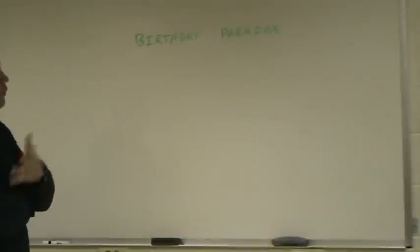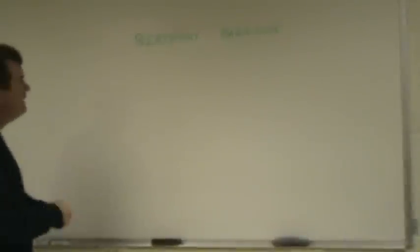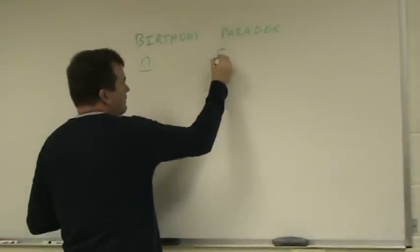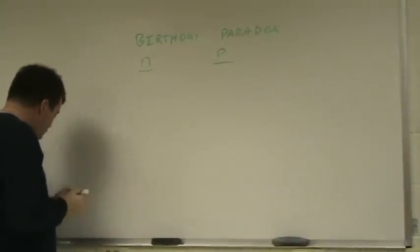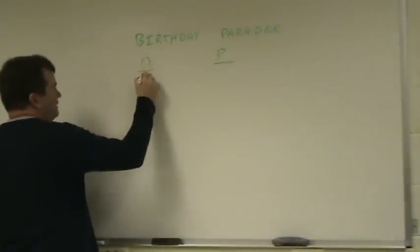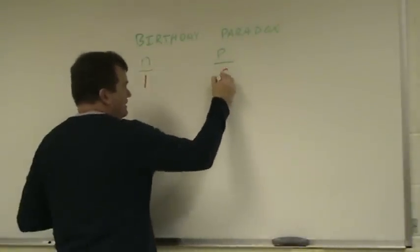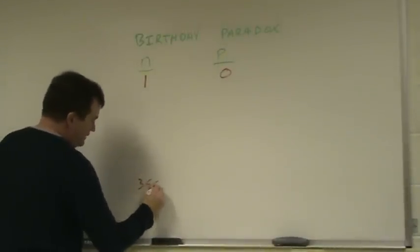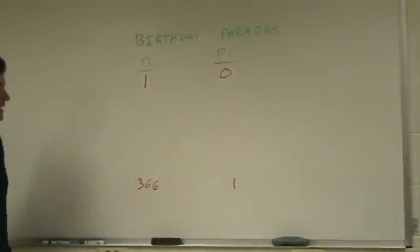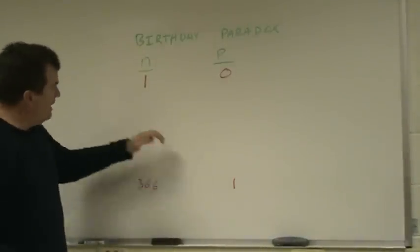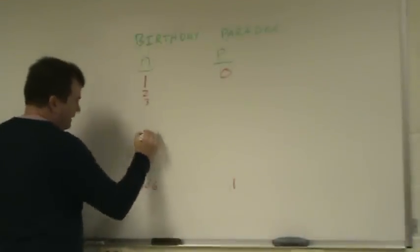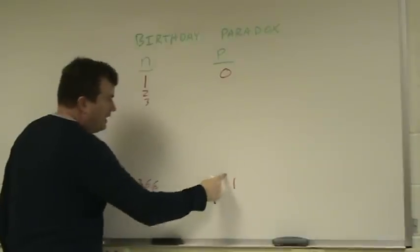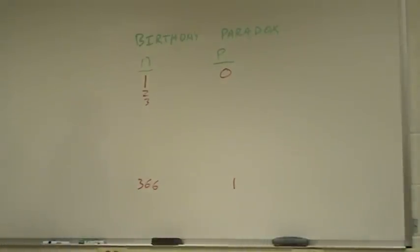So let's say we have N, the number of people, and P, the probability. We know: at N=1, probability is 0. At N=366, probability is 100%. As N goes from 2, 3, 4 and so on, P goes from 0 on its way up to 1. We just don't know the increments.